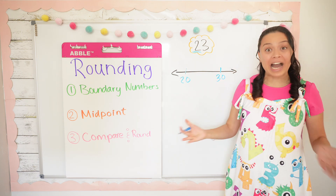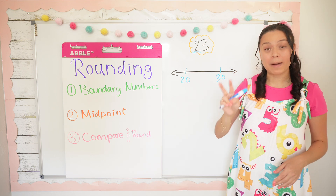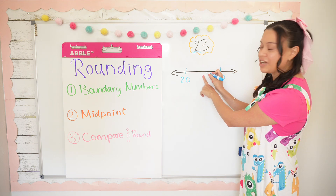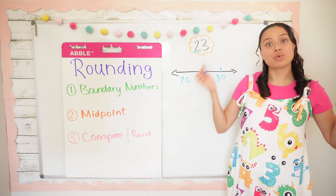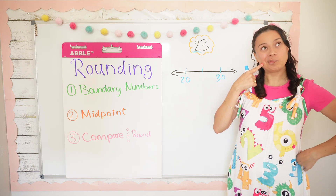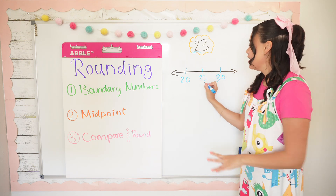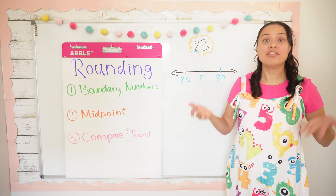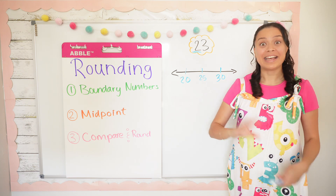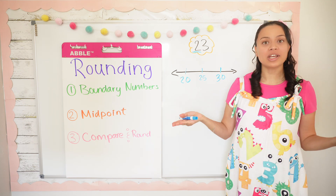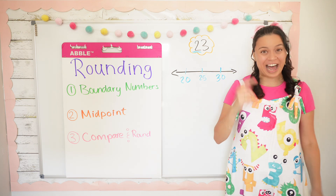Now step two says to find the midpoint. The midpoint is the halfway point between two numbers, so I'm going to draw a line right here in the middle. What is the halfway point between 20 and 30? It's 25. How did I know it was 25? Well, what's the halfway point between 0 and 10? It is 5. So when we're looking for a midpoint between two tens, it's always going to end in a 5.